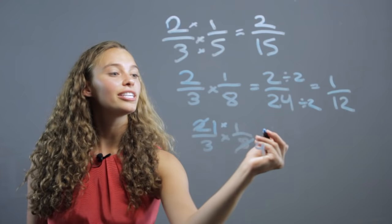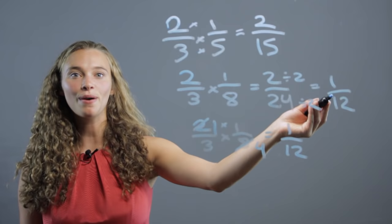Now, there's nothing else here that shares a common factor, so now we can multiply. 1 times 1 is 1. 3 times 4 is 12. 1 twelfth, just like we got there.